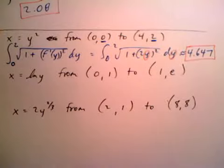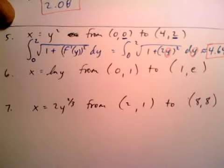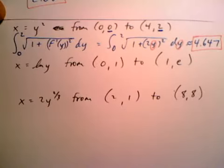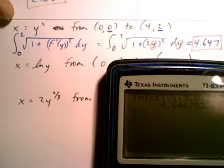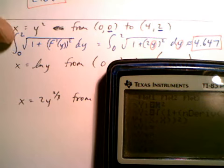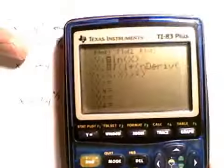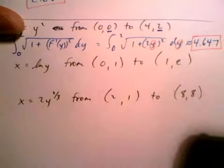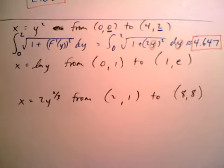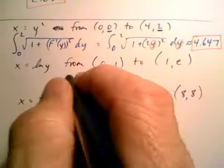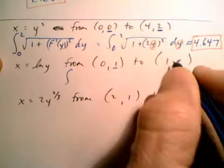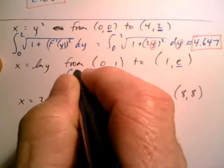If you want to try these other two, go right ahead and pause the video. I'll just type them in. So x equals ln y. I'm going to type in ln x. And we're integrating from (0,1) to (1,e). So I'm going to go 1 to e. E is bigger.